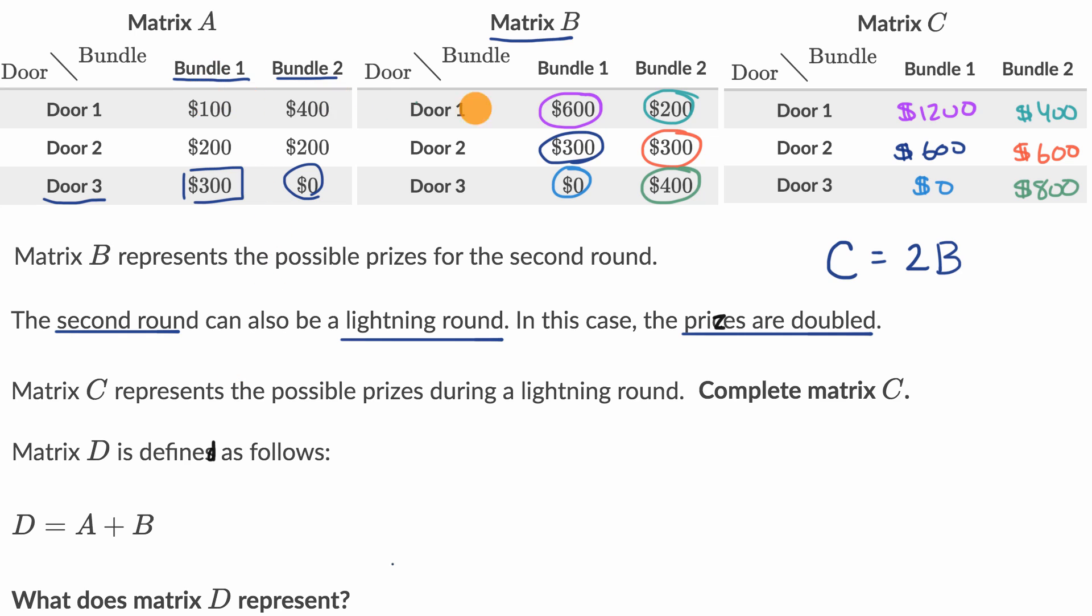If we add two matrices, we're going to add all the corresponding entries. It tells you what is the combined prize for both rounds one and two based on what the contestant picks and what the host picks. Matrix D's top left entry will tell you, in total, if the contestant picked door number one and the host picked bundle number one, what would you get? It would be a hundred dollars plus $600. So it would be the total for rounds one and two, assuming we don't have the lightning round like we had in matrix C.